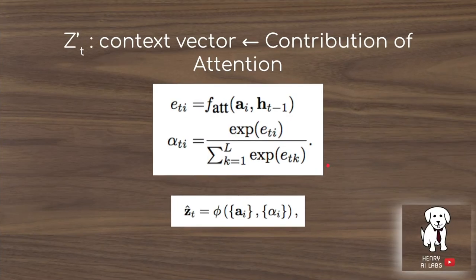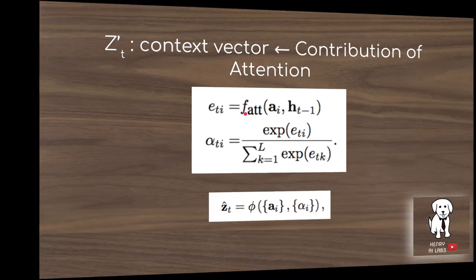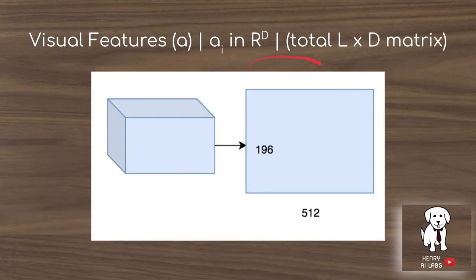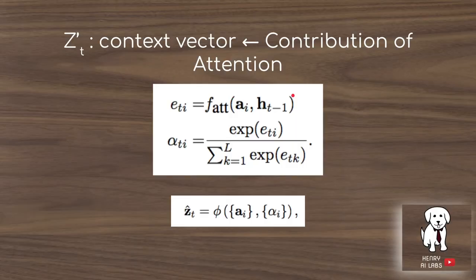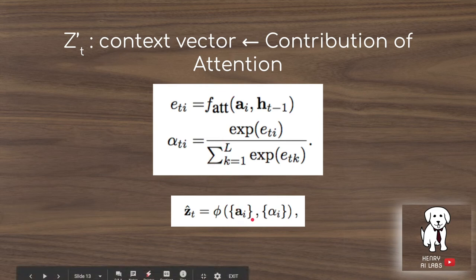This is how the context vector is produced. The attention model takes in that A feature map that we described here. The attention is going to look at this as well as the word that was just predicted. So it would look at the feature maps and then it would look at, say, 'stop'. And then it would produce this alpha mask over the feature map that is then going to be used to parse the convolutional neural network features.